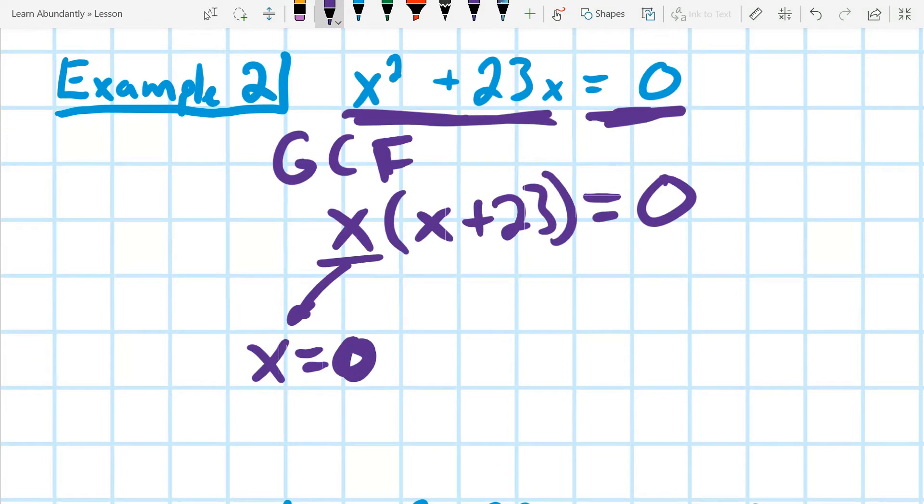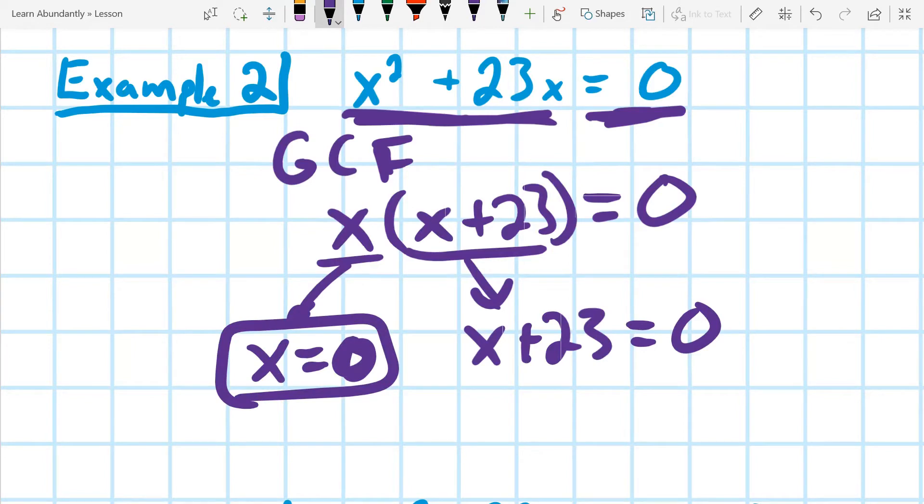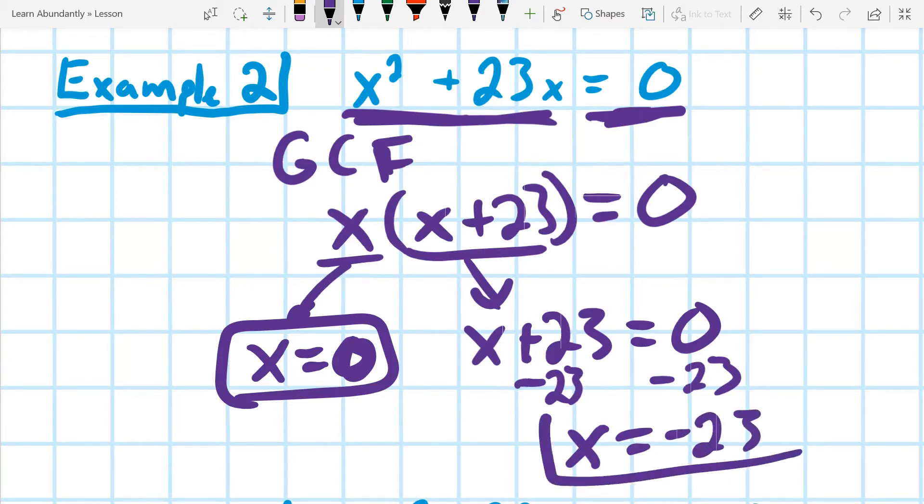The second one being x plus 23 equals zero. This one's already solved. So I just have to solve this one by subtracting 23 from both sides. x equals negative 23. And so we have our two answers. We could write the solution set as zero comma negative 23.